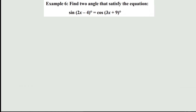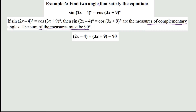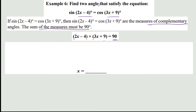Let's find two angles that satisfy the equation: the sine of (2x − 4) equals the cosine of (3x + 9). Since sine and cosine are co-functions, the angles must be complementary, meaning their measures sum to 90 degrees. We set up the equation: (2x − 4) + (3x + 9) = 90.